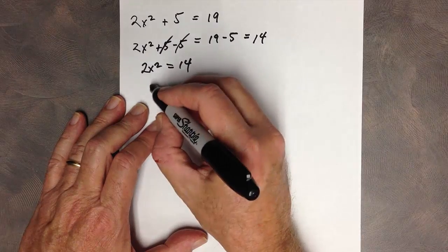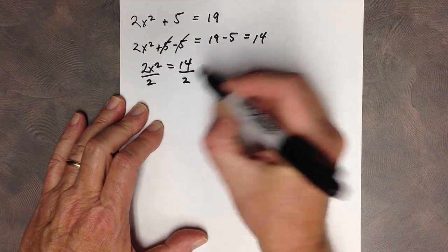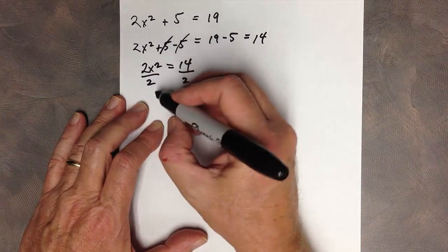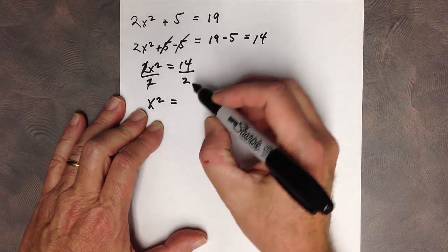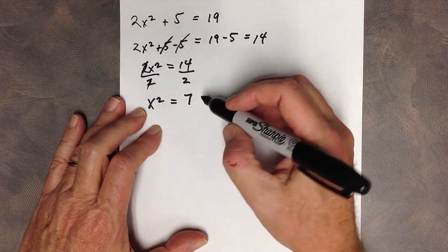And that would be, if I divide both sides of the equation by 2, I should get, 2 is canceling there, x² = 14 divided by 2, being 7.